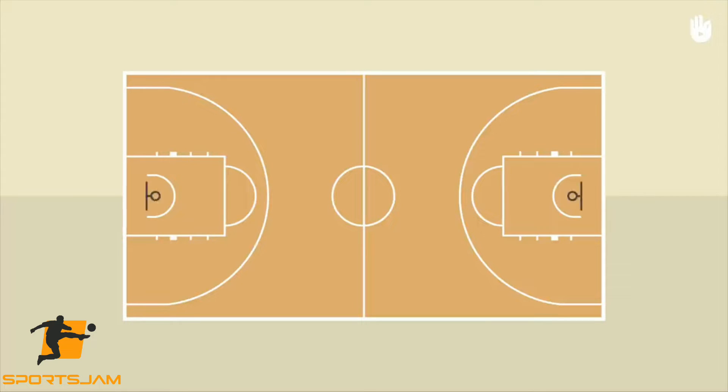At each end of the court, there is a 45-centimeter wide hoop fixed on a panel suspended 3.05 meters above the ground.